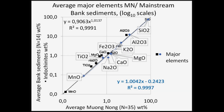The muang-nong tektites are compared to Mekong river bank sediments that have a composition almost equal to the tektites, and fits within other attempts to predict a precursor's chemical composition. The major oxide elements fit at an R-square of 0.9991.